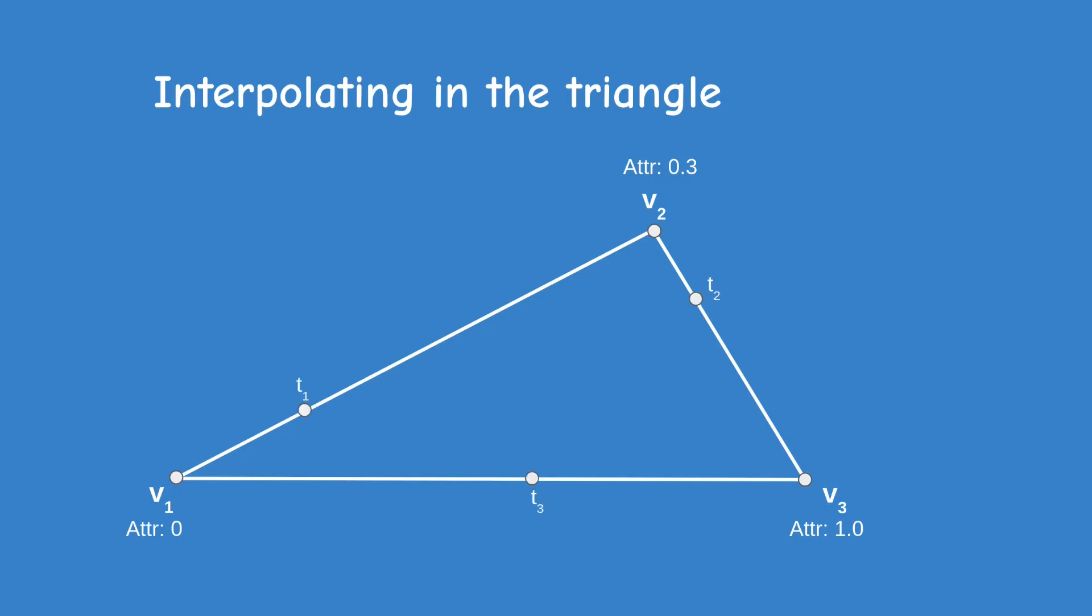We can use the equation that we developed in order to interpolate along the edges of the triangle, but this brings into effect just two vertices. If we move off the edge and into the triangle, we must bring in the effect that the third vertex has on the interpolated value.